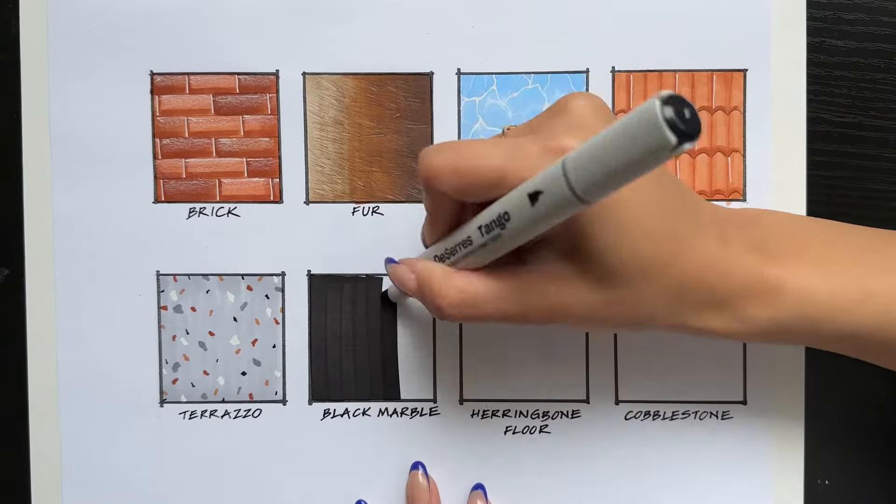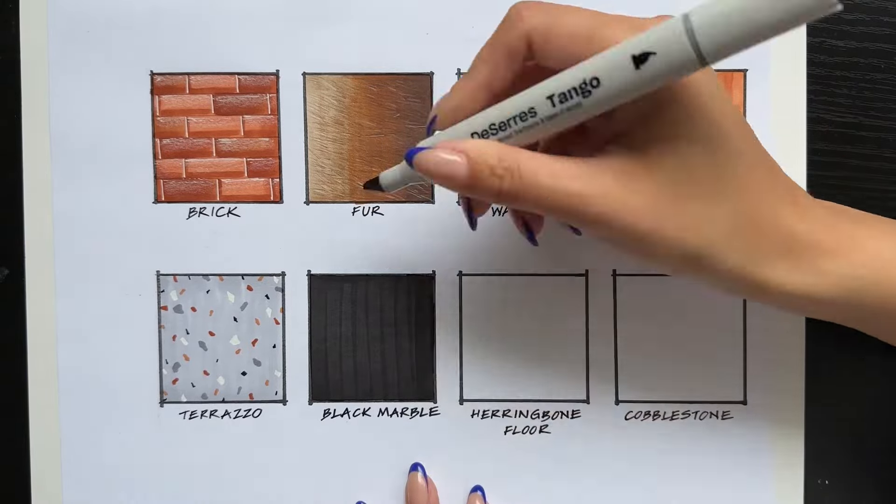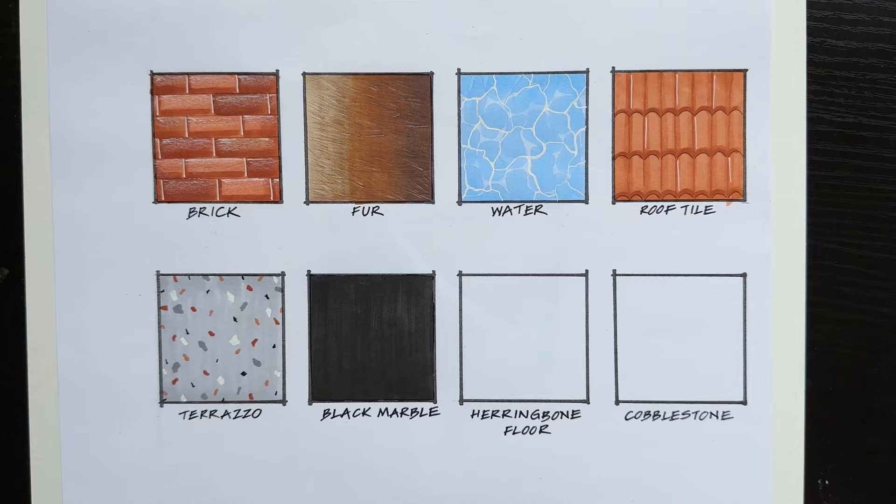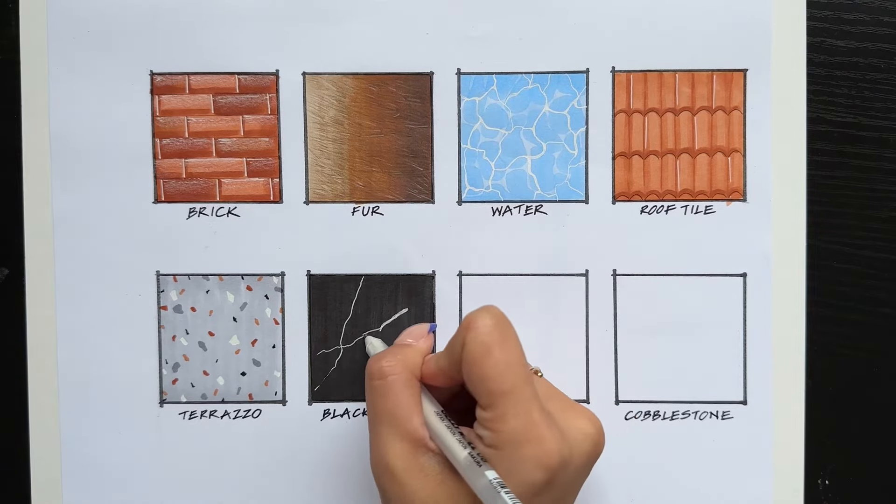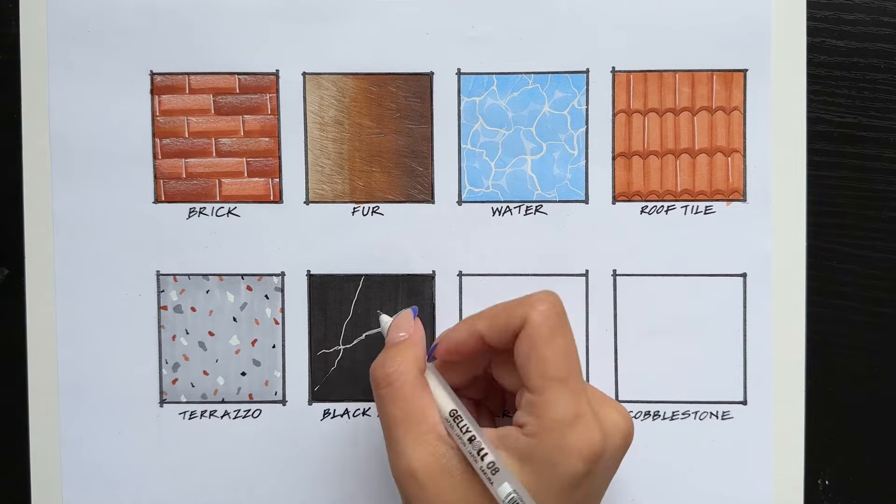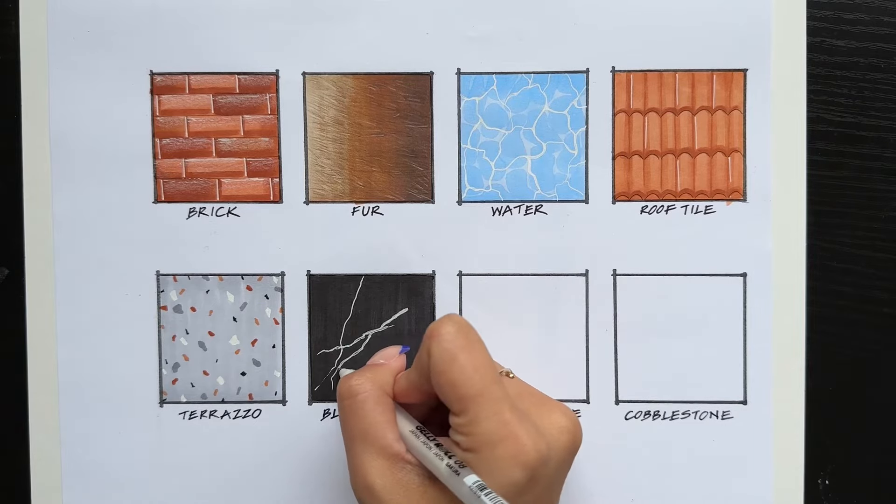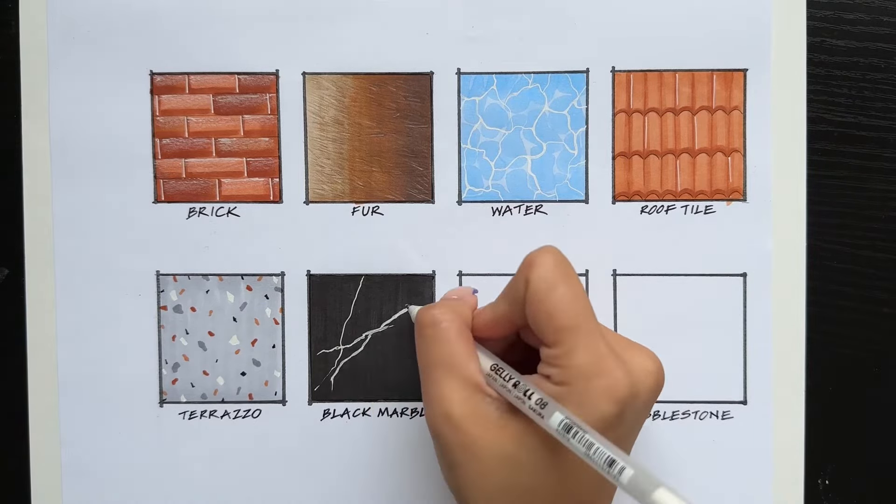Black marble is a fun one and a pretty simple texture to draw. You just need to create that base layer. I did two coats. And then using a reference photo, that is definitely very helpful. A reference photo and a white gel pen. You're going to create the veining of the marble.